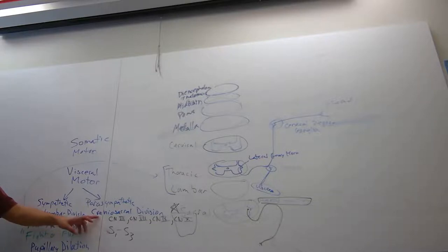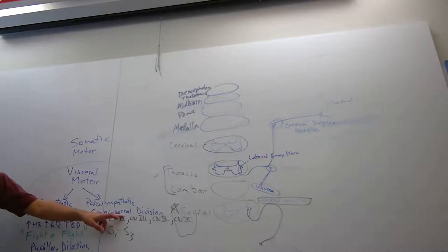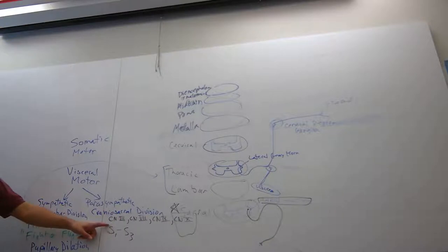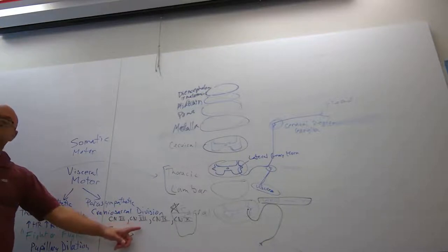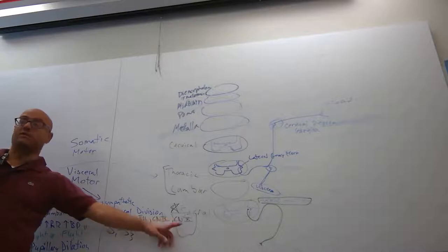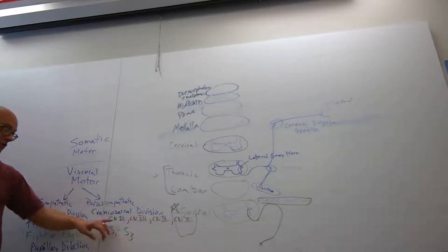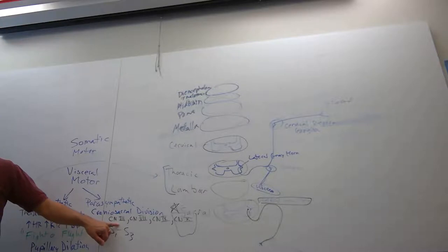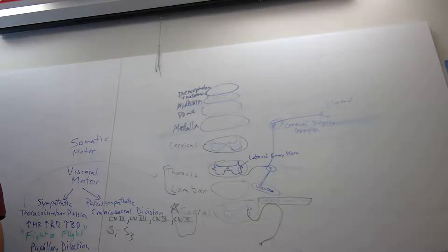Who makes up the craniosacral division? The cranium and sacrum. Which part of the cranium? Cranial nerve number three, cranial nerve number seven, cranial nerve number nine, and cranial nerve number ten.